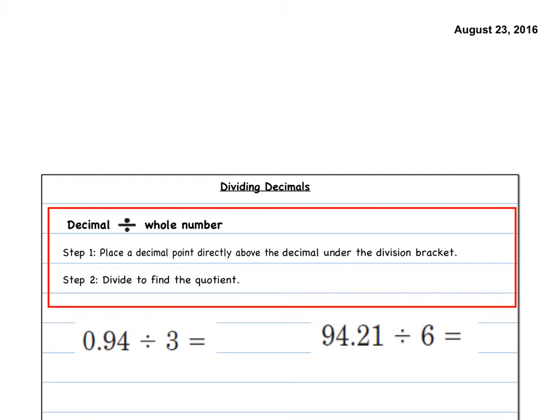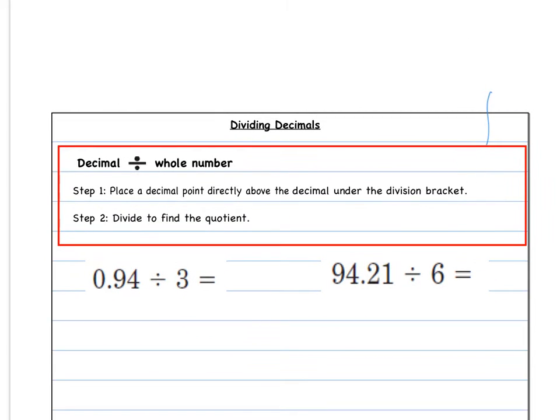Notes are ready. Here we go. We're going to look at dividing decimals, both dividing decimals by a whole number and then dividing a decimal by a decimal as well. We're going to start with the easier of the two and dividing by a whole number. Our first step when dividing a decimal number by a whole number is that we are going to place the decimal point directly above the decimal under the division bracket. Step two, find the quotient.